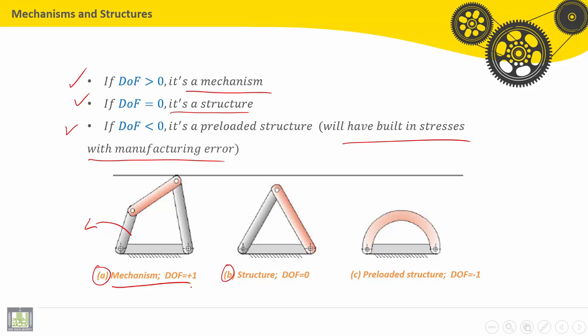Second example is a structure. Degree of freedom equals 0. No mobility here. Third example is a preloaded structure. Degree of freedom is negative, minus 1.